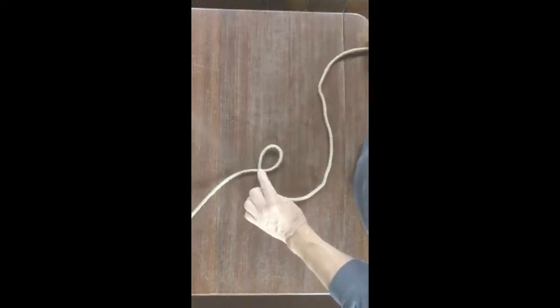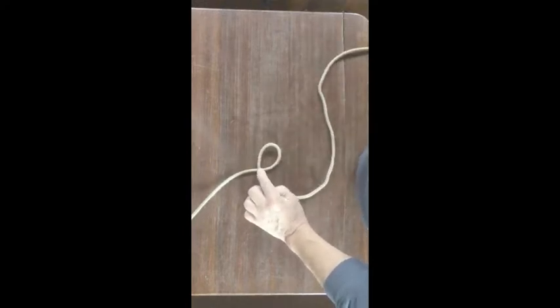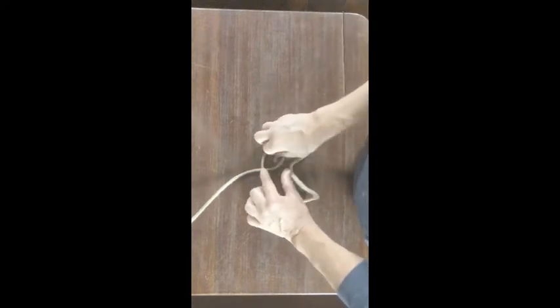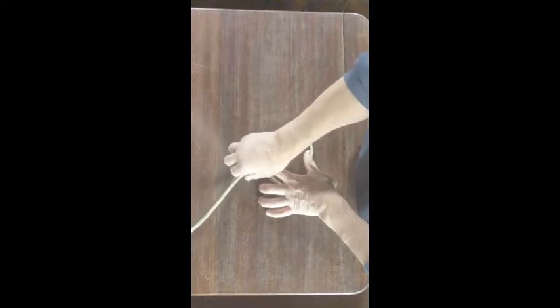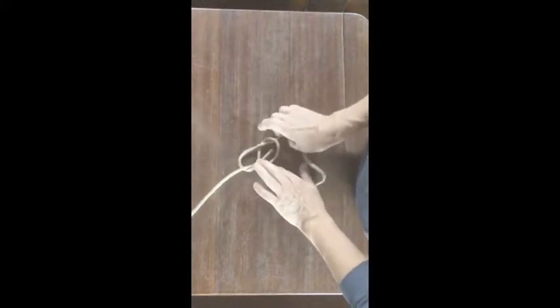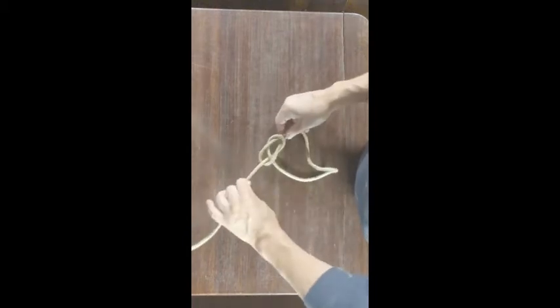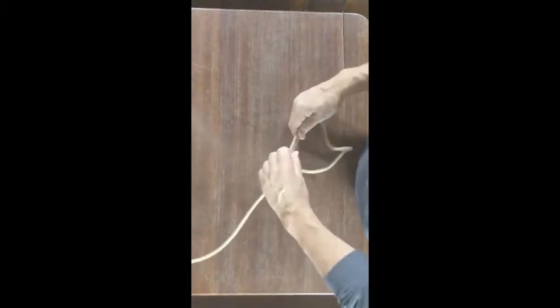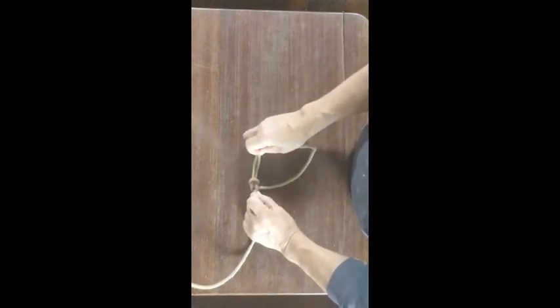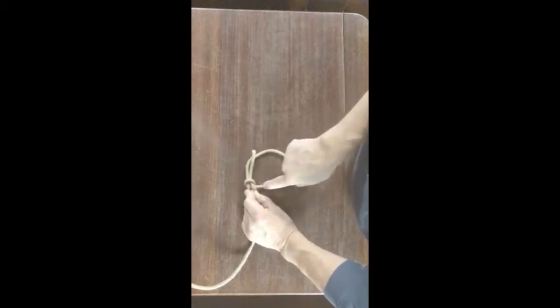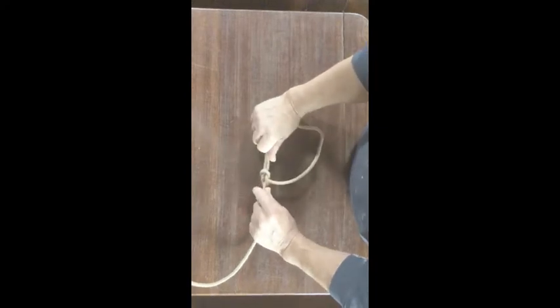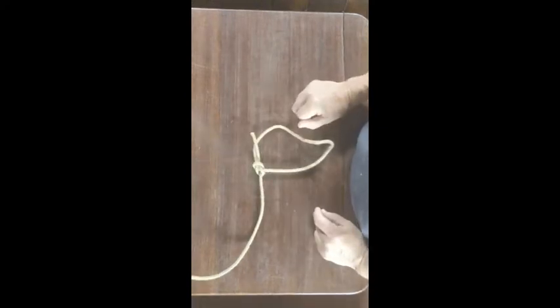Make the hole over the top, standing part of the rope, rabbit up through the hole, round behind the tree, back down the hole, cinch it up. That's your bowline. The working end of the rope here should come through the same side as this part of the loop, not down the other side.